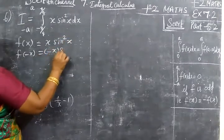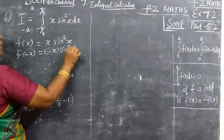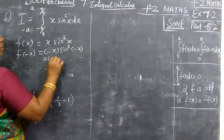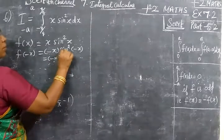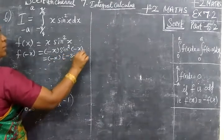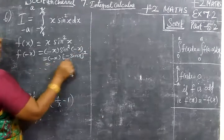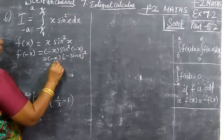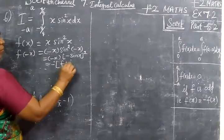So minus x, here you are writing sin squared minus x. That is minus x. So sin of minus x equals minus sin x. So minus sin x full square. Square will make the minus become plus, so minus of f(x).